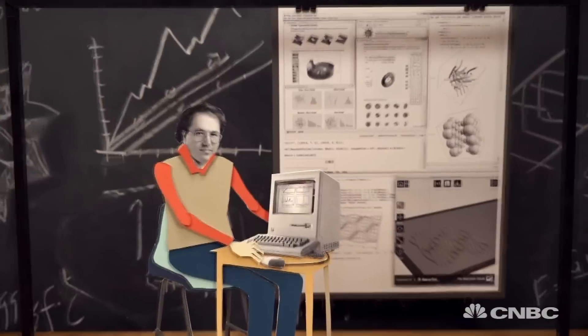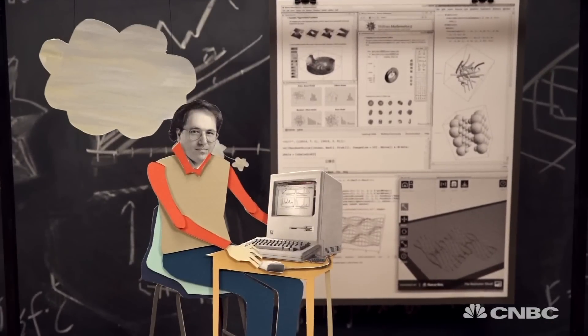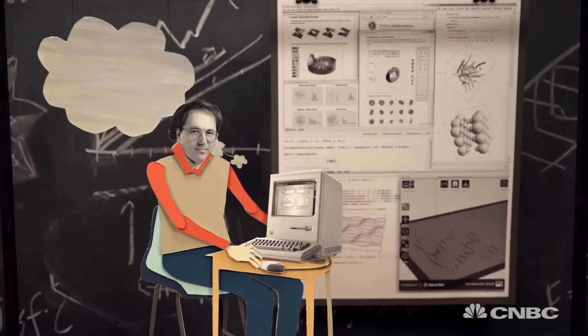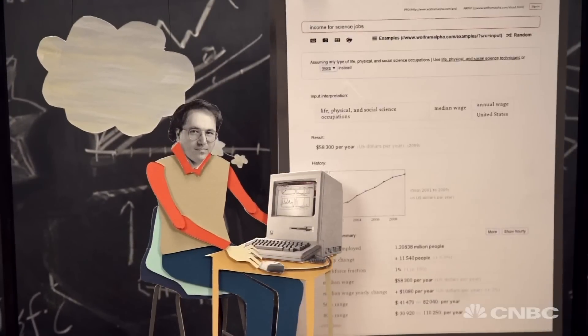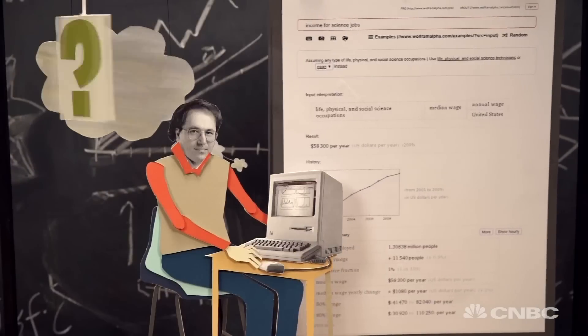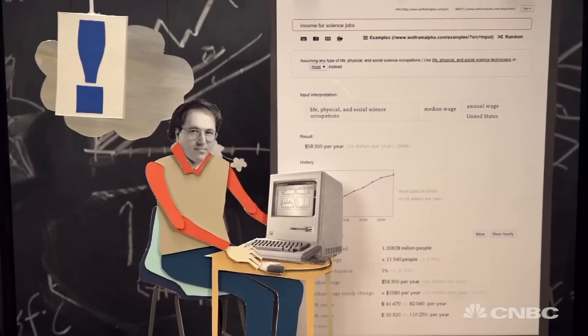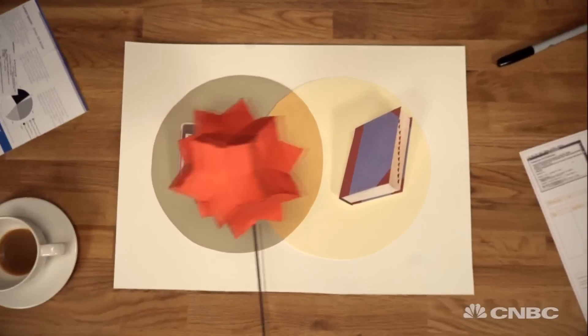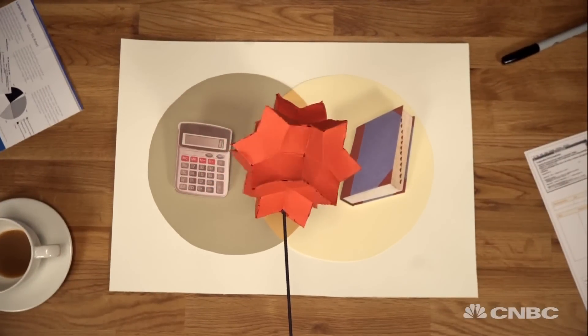In 2009, Wolfram used Mathematica to develop his next great creation, a computational knowledge engine called Wolfram Alpha. You ask it questions, it gives you answers. Not links, answers. It's sort of like combining a calculator with an encyclopedia.